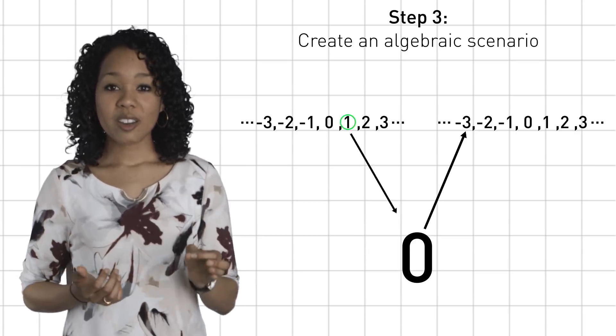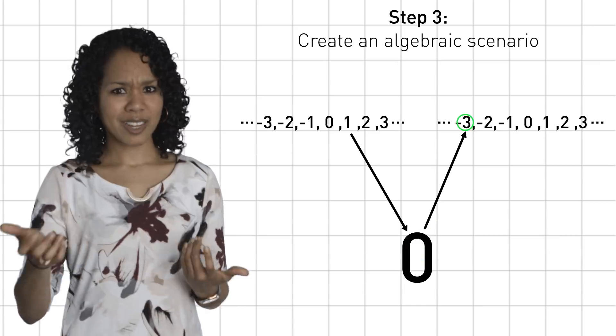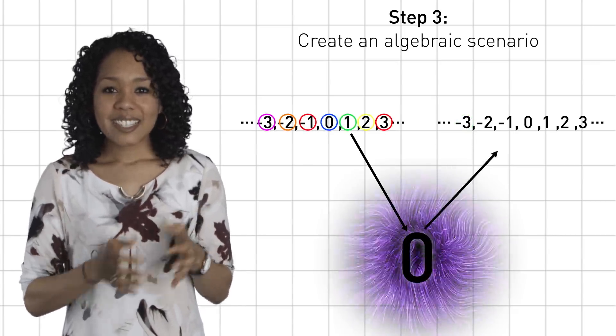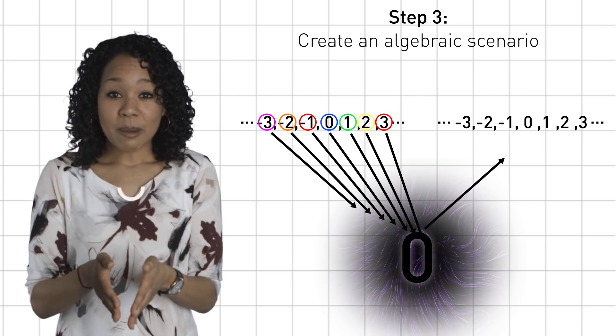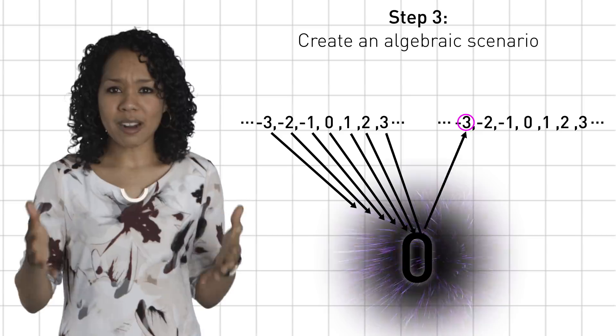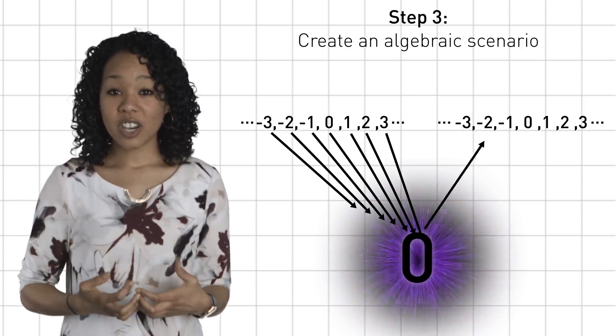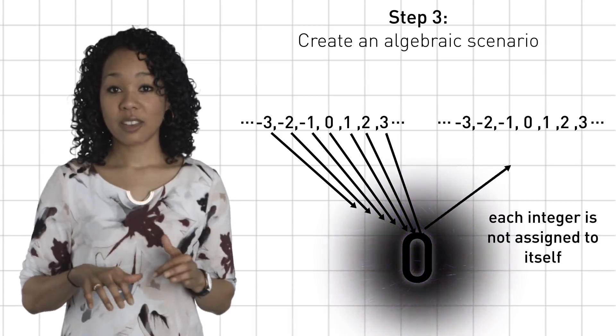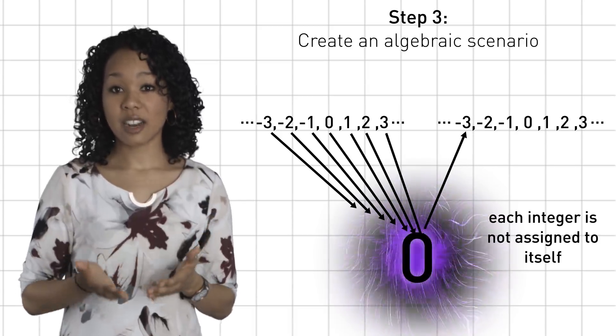It's almost like 0 acts as a black hole. We can't send all the integers to a single number and expect to recover the full set. We can't undo the process. So here we have a composition of functions in which each integer is not assigned to itself. This is our algebraic scenario.